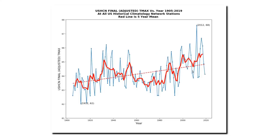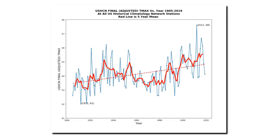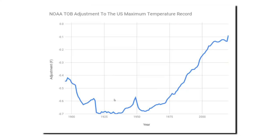The public will never see graphs of the actual measured data unless they see it from me or from a few other people who present them. What the public sees are the graphs showing warming, and people generally assume it's the actual thermometer data, but it isn't. These are the adjustments being made to the maximum temperature record. The red line is the time of observation bias adjustment, the yellow line is the final adjustment on top of that, and the blue hockey stick shows the total adjustments — about 2 degrees Fahrenheit.